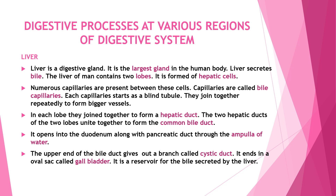The liver is a digestive gland and the largest gland in the human body; it secretes bile. It contains two lobes formed of hepatic cells. Numerous bile capillaries are present between these cells, each starting as a blind tubule that joins to form bigger vessels. In each lobe they join to form the hepatic duct. The two hepatic ducts unite to form the common bile duct, which opens into the duodenum along with the pancreatic duct through the ampulla of Vater. The upper end of the bile duct gives off a branch called the cystic duct, ending in an oval sac called the gallbladder, which is a reservoir for bile.